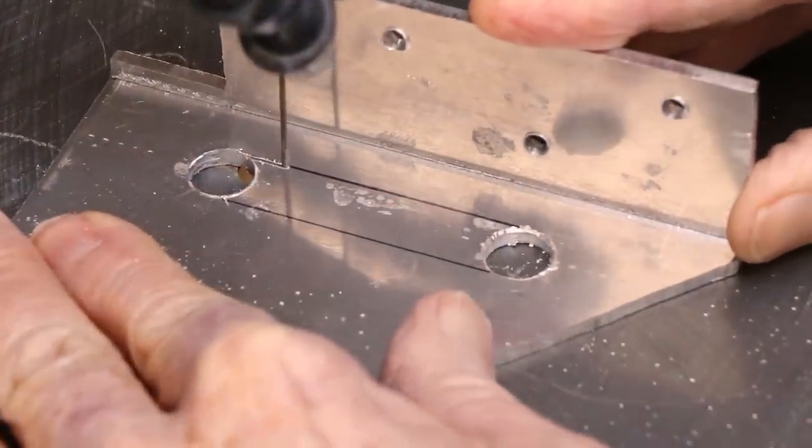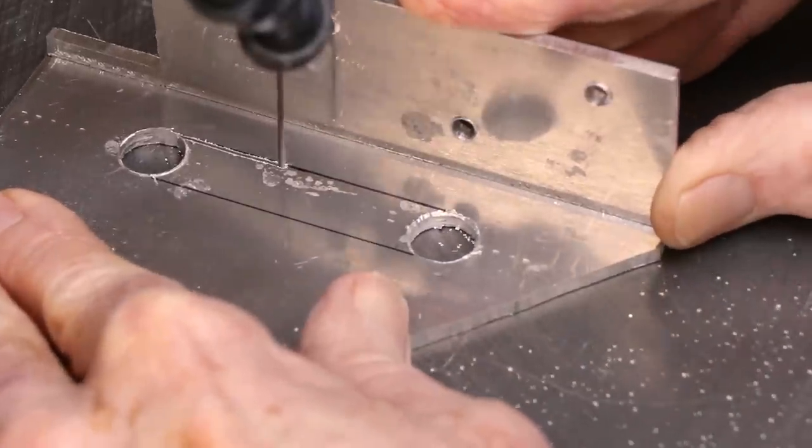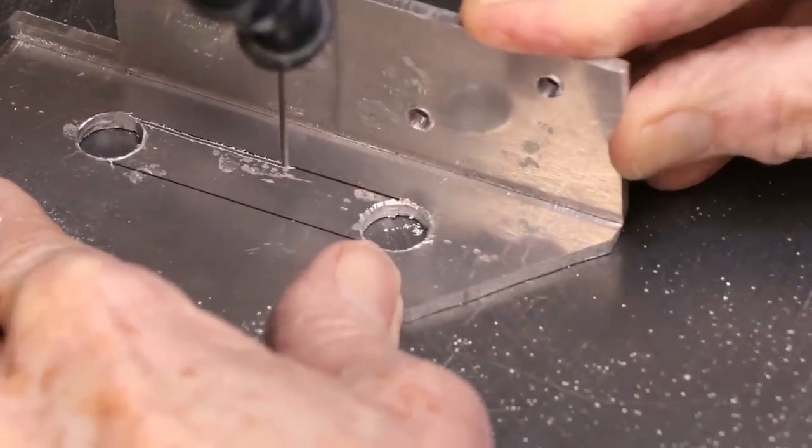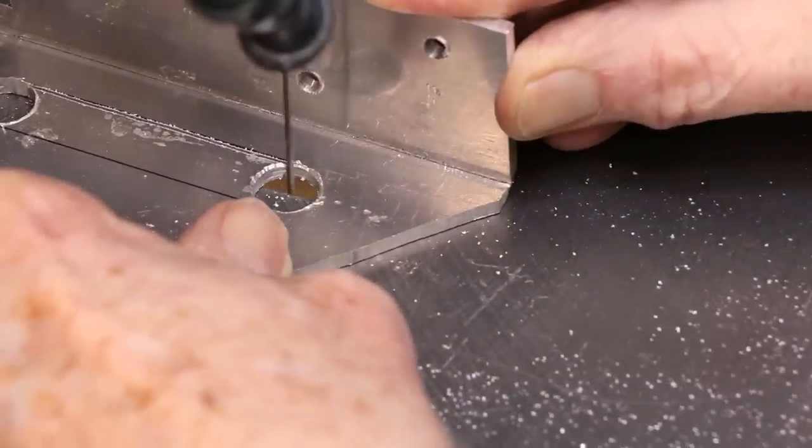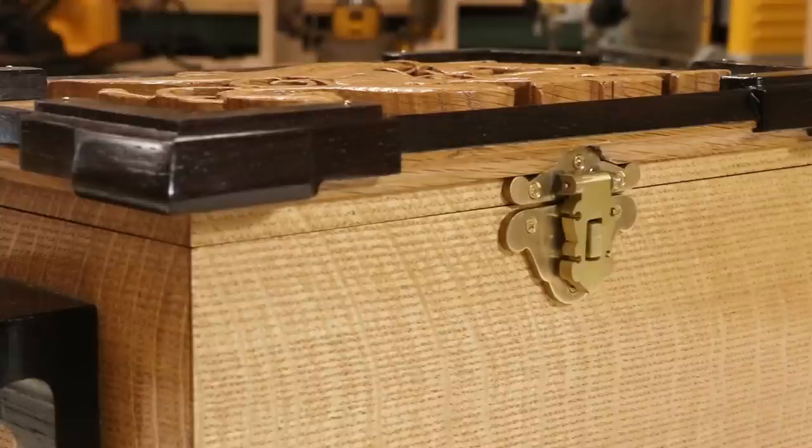Incidentally, my scroll saw will also cut aluminum, as long as you install a blade designed for metal. It's not nearly as fast as the bandsaw, but it can handle very tight curves. I used it to cut the curved shapes on the box catch in this photo.